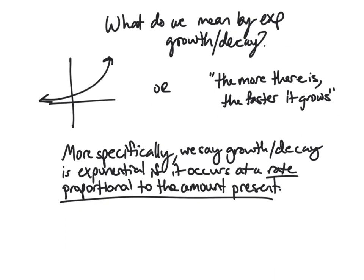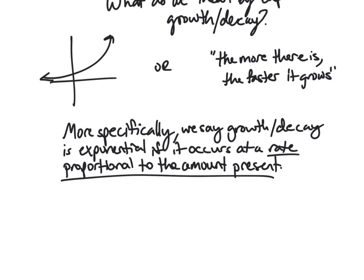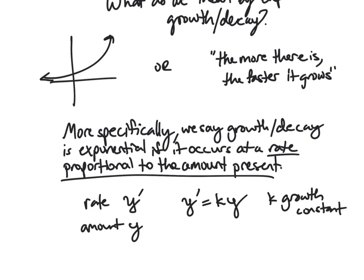So what does this mean for us? Well, we just talked about differential equations, and we can actually express this in terms of a differential equation. So we have a rate, well, our rate is like y prime, if our amount, our original function is y, and then this says that our rate is proportional to the amount. So y prime is some proportion of y. So k here is going to be a constant, and it'll be what is known as our growth constant. And so this differential equation represents exponential growth or decay.